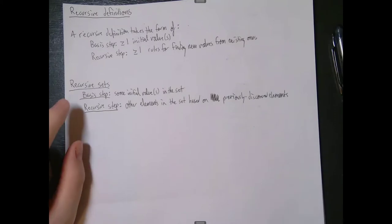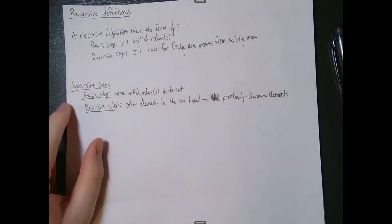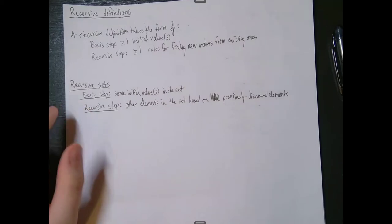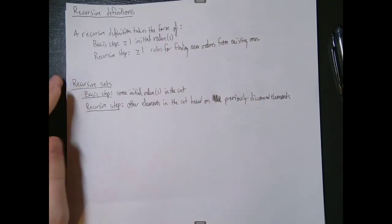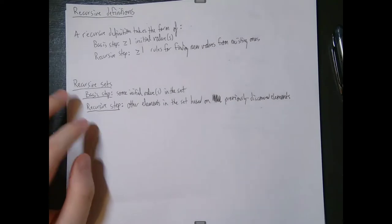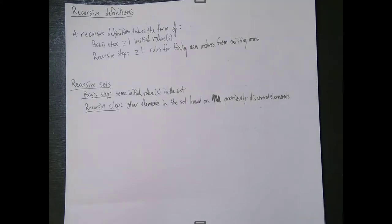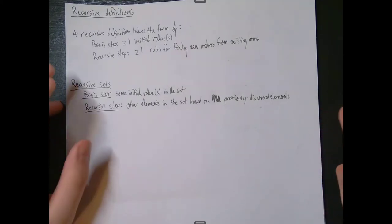For a recursive set, the basis step is basically just going to outline some initial value or multiple values in the set. And the recursive step is going to take all of the elements that you've discovered so far and define rules for adding more elements. We can do an example.